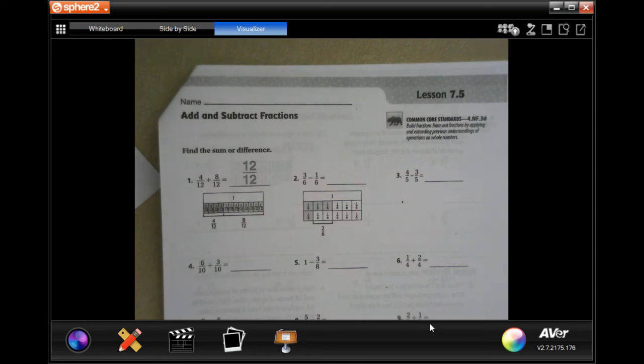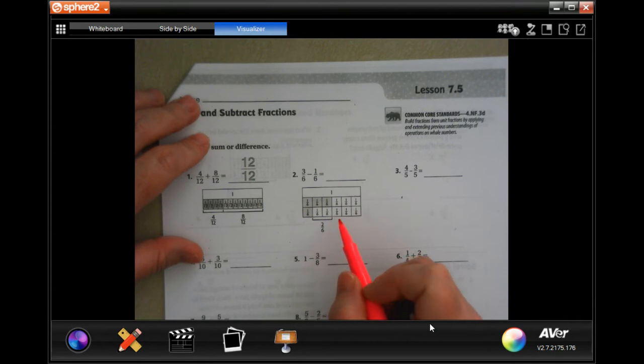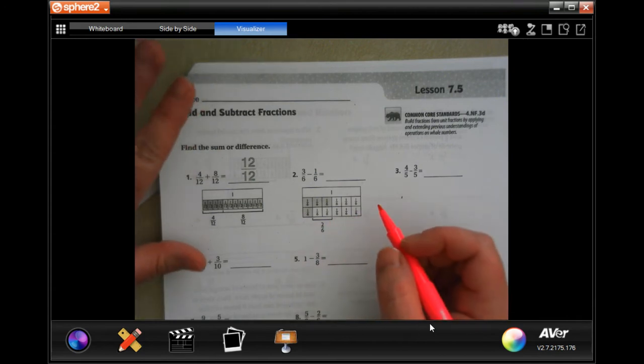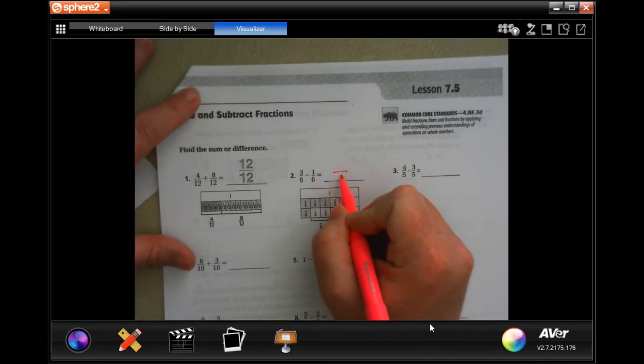Hey y'all, welcome to fourth grade Chapter 7, Lesson 5. We're going to go ahead and get started with number two. If you need to use these blocks, you absolutely can. I'm not going to, but you've done enough of these by now that y'all know how to do this. So remember, the denominator stays the same. Three minus one is two. The biggest problem on this page is going to be paying attention to the sign because some are subtraction and some are addition.